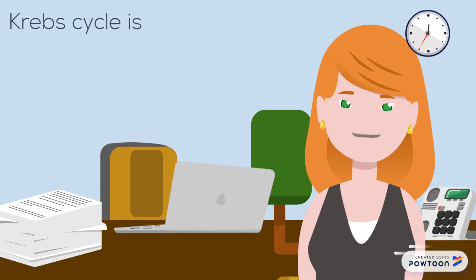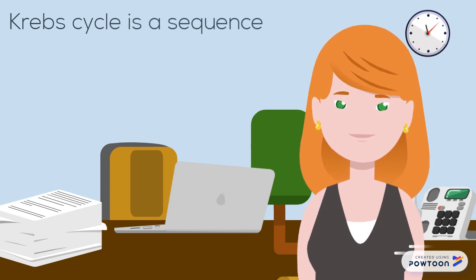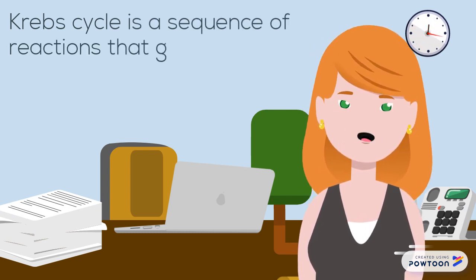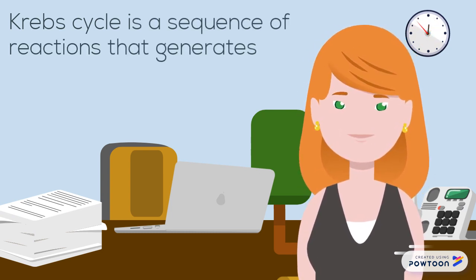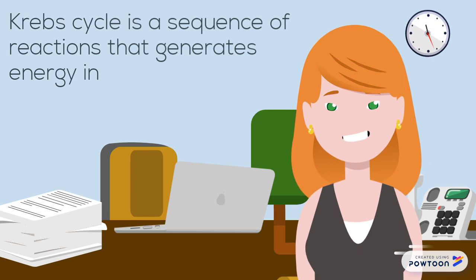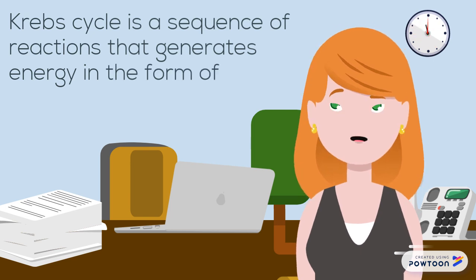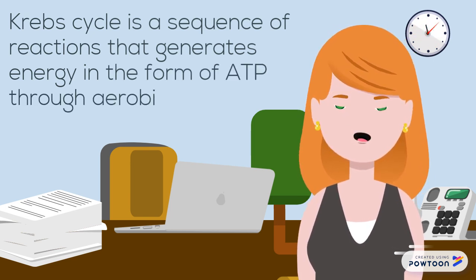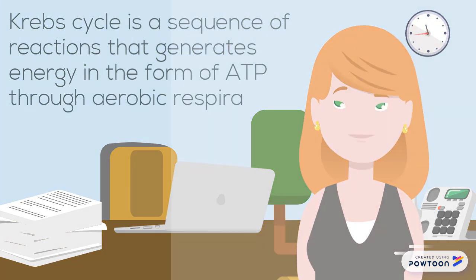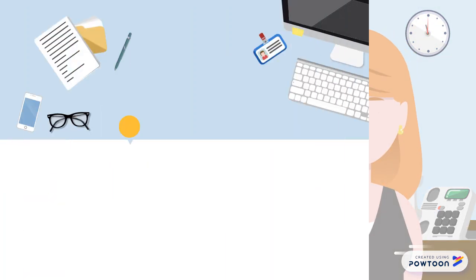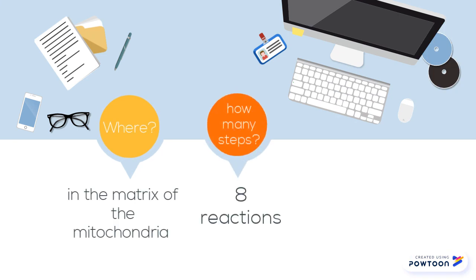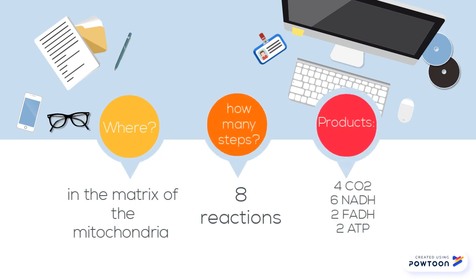What is Krebs cycle? Krebs cycle is a sequence of reactions that generates energy in the form of ATP through aerobic respiration. Where does it take place? It takes place in the matrix of the mitochondria.